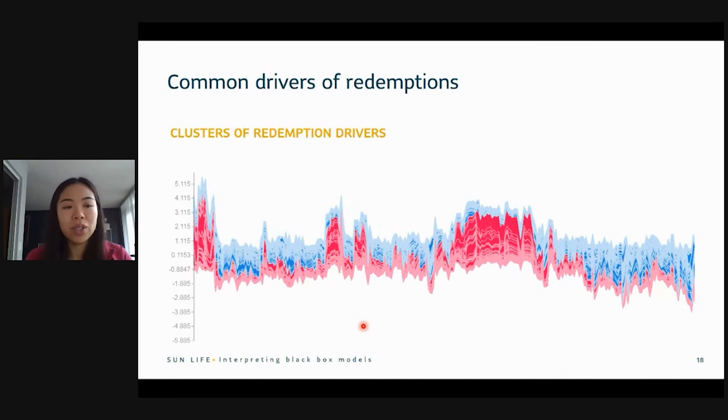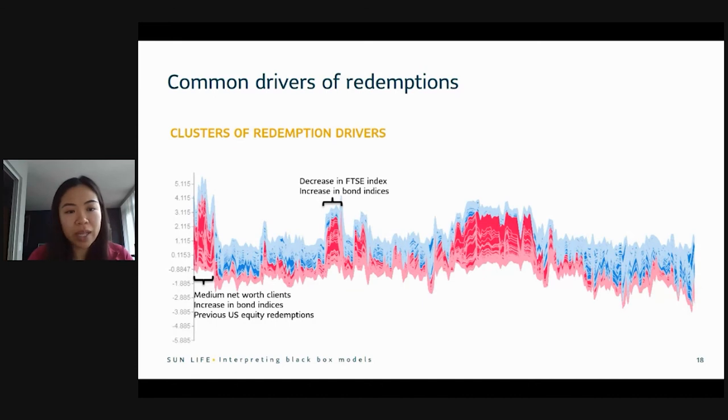Now, you can also take the SHAP values for each prediction and then cluster them to see if there are certain groups of predictions that are common. So here we have a cluster of redemptions that were all driven because for medium net worth clients and because there was an increase in bond indices. And these clients also had previous U.S. equity redemptions. This cluster redeemed their funds because there was a decrease in the FTSE and an increase in bond indices. This cluster, these clusters over here, they were all sold off because these funds have no fees or no load, as they call it in the business. And so with SHAP, you can see common drivers by using this function in the SHAP library to plot the entire data set and see what's really driving these predictions.